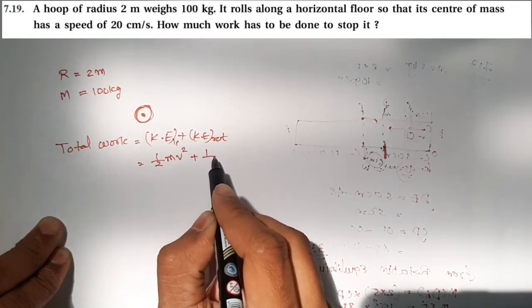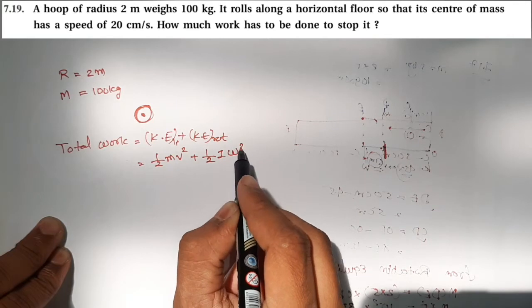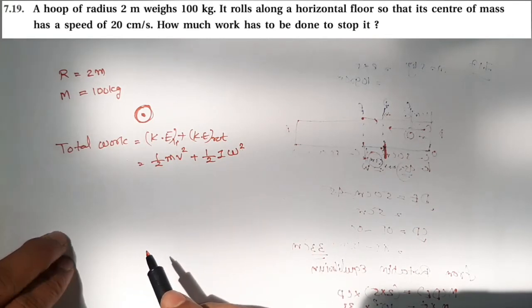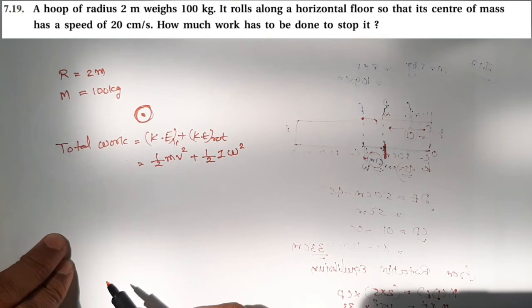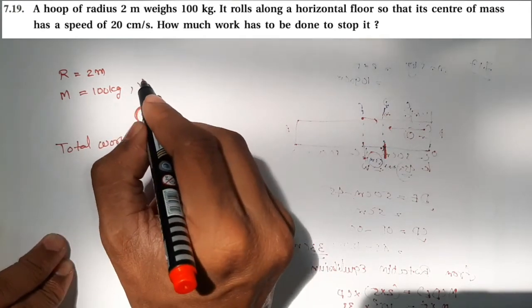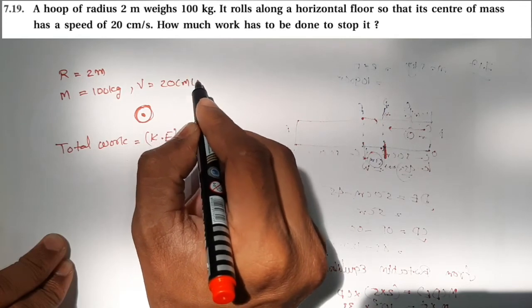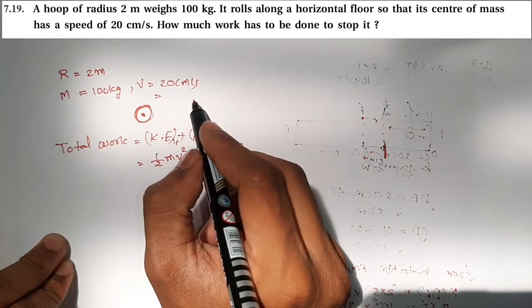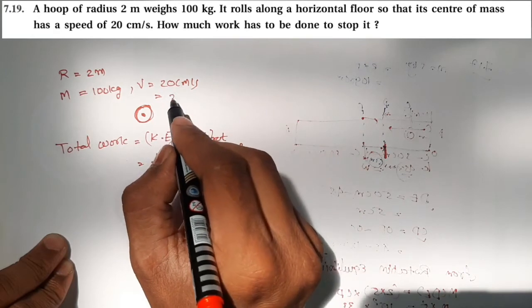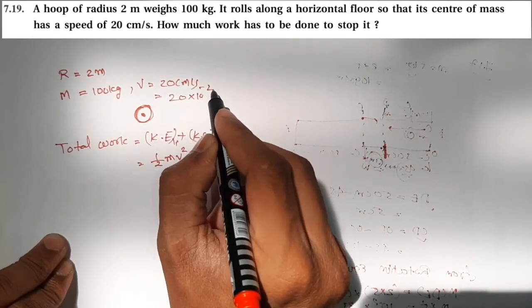We have the values: r, m, and velocity of 20 centimeters per second. Converting this, 20 centimeters per second equals 20 times 10 to the minus 2 meters per second.